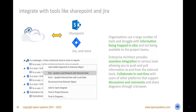Integrate your Enterprise Architect models with other platforms, including SharePoint, JIRA, ServiceNow, Team Foundation Server, and many more. Set up the integrations with the ProCloud server and then push and pull information to and from the external tools. Collaborate in real-time with users of other platforms that support discussions and comments, and share diagrams through a browser using WebEA or Prolaborate. Bring teams together and visualize a wide range of enterprise data from multiple platforms in a single pane of glass.